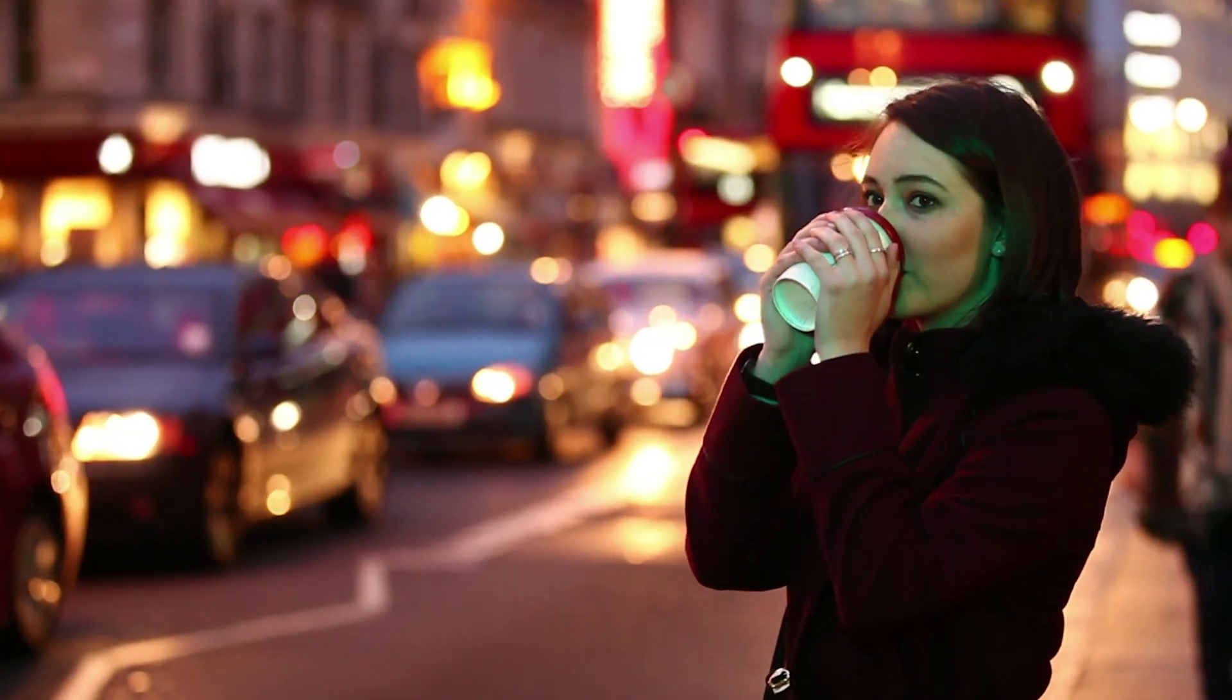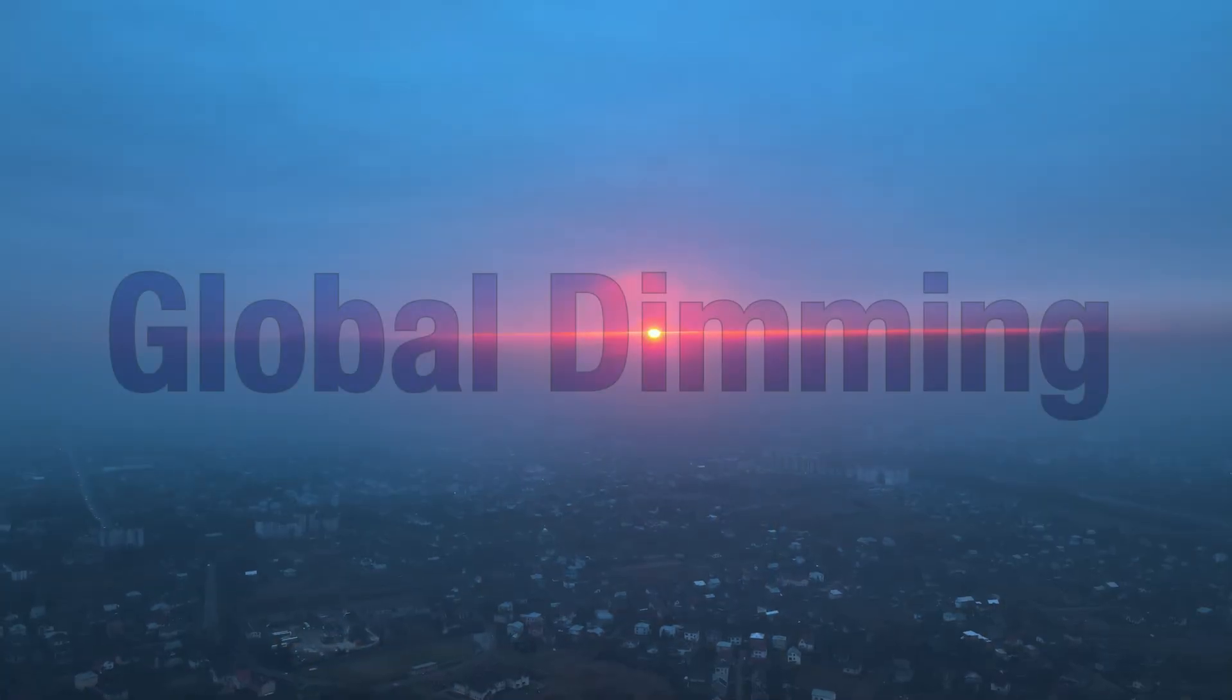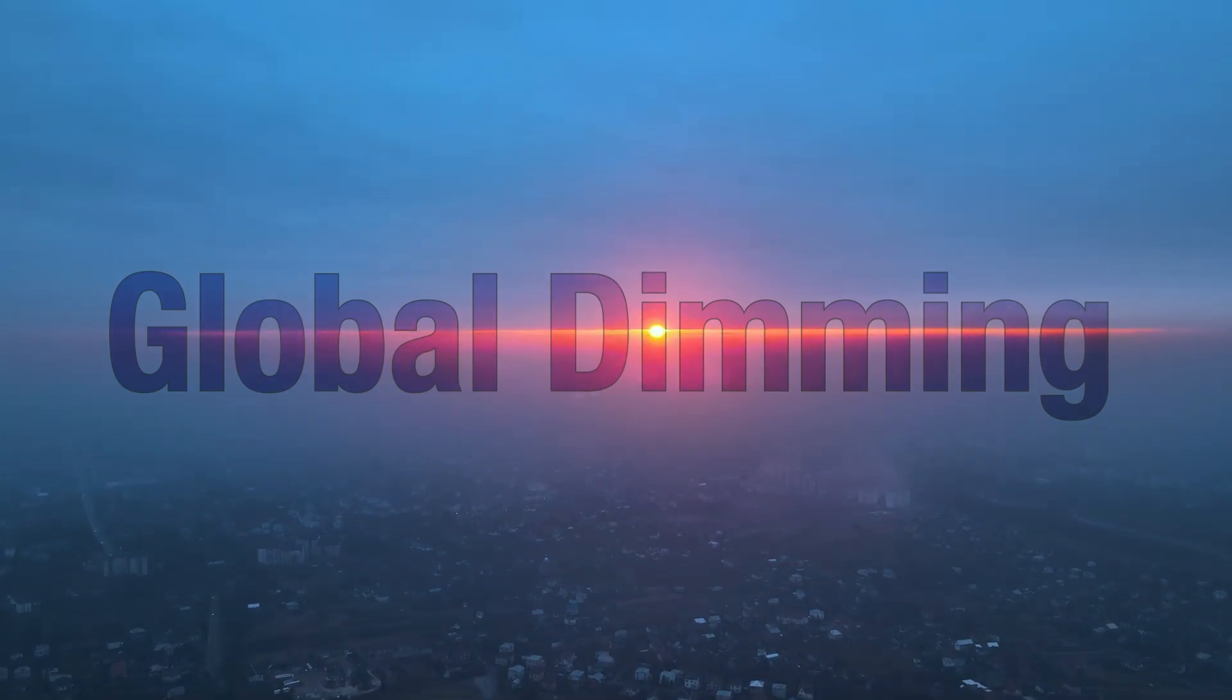We often think of pollution as a local problem, something that affects our towns and cities and us when we're there. But actually, some of its effects stretch far beyond what we can see. One of them is called global dimming. Global dimming is the idea that the amount of sunlight reaching Earth's surface is less today than it was, say, 100 years ago.